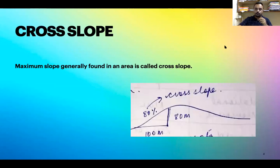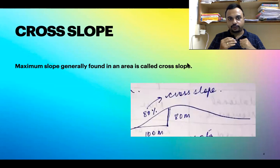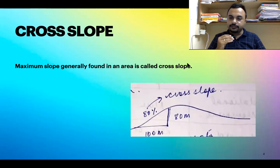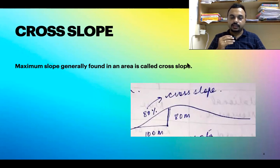Cross slope is sometimes referred to as camber, but camber is a little different — camber is the slope of a particular road, while cross slope is of a particular area. As seen in the diagram, for 400 meters horizontal there is a rise of 80 meters vertical. If an area has a cross slope of 80%, it is considered mountainous; if it has a very small cross slope of two to three percent, it is a plain area.